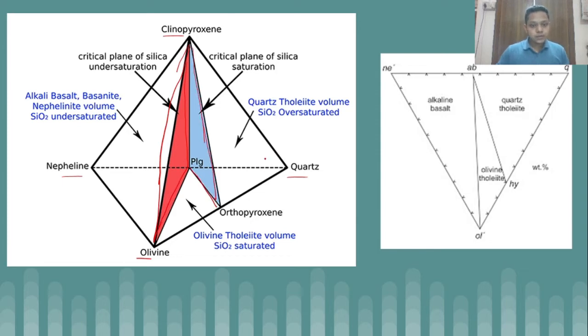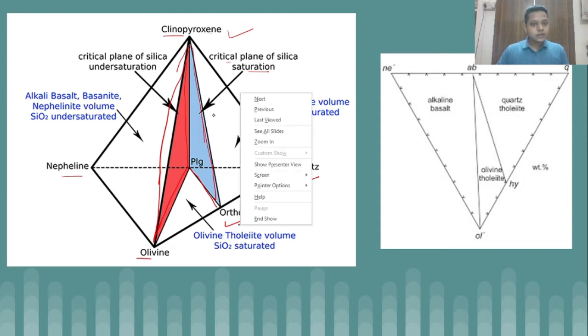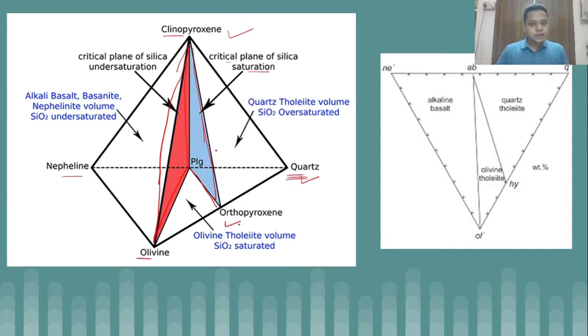Let us talk about the quartz tholeiite. In this region, the main important constituents are clinopyroxene, orthopyroxene, and quartz. A plane which is separating this volume from the rest of the tetrahedron is a critical plane of silica saturation whose end members are clinopyroxene, plagioclase, and orthopyroxene. Anything on the right side of this is quartz-rich, and hence the volume is known as quartz tholeiite volume or silica over-saturated region.